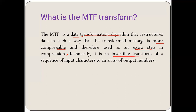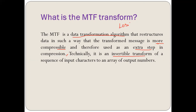Technically it is an invertible transform of a sequence of input characters to an array of output numbers, as we have already seen in the Burrows-Wheeler transformation in the earlier lecture. It has the same consideration — it produces a more compressible format and it is an invertible transformation. Invertible means you can reverse it in the same process, so that is why it is considered lossless, because if we can revert it back, it is lossless compression. You can achieve the original sequence even after the compression.